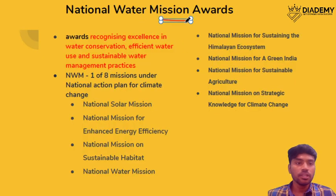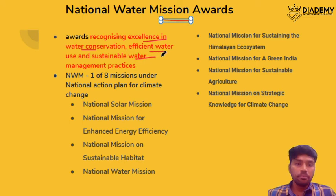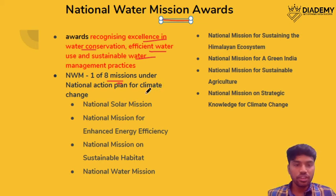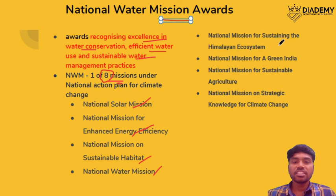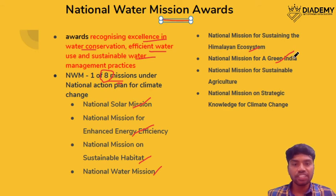The National Water Mission Awards recognize excellence in water conservation, efficient use of water, and sustainable water management practices. This is given as part of the National Water Mission, which is one of the eight missions of NAPCC — National Action Plan for Climate Change. The eight missions include: National Solar Mission, Enhanced Energy Efficiency, Sustainable Habitat, National Water Mission, National Mission for Sustaining the Himalayan Ecosystem, National Mission on Green India (afforestation), National Mission on Sustainable Agriculture, and National Mission for Strategic Knowledge for Climate Change.